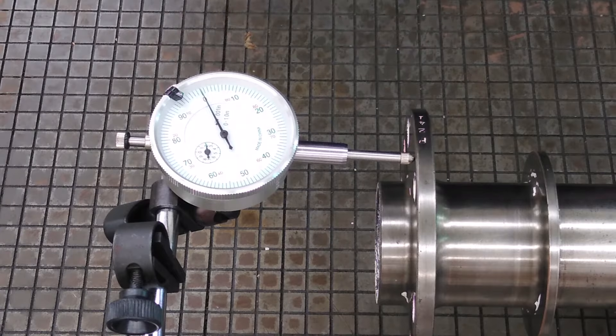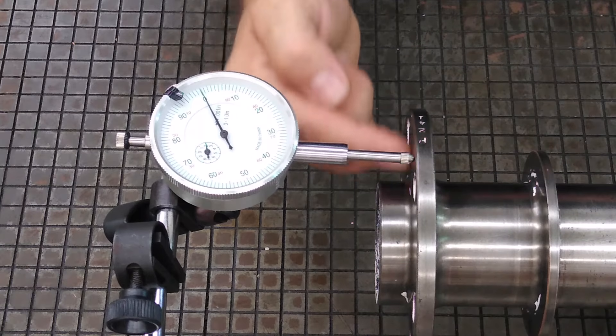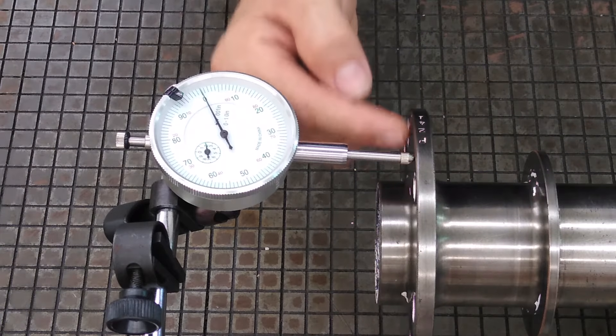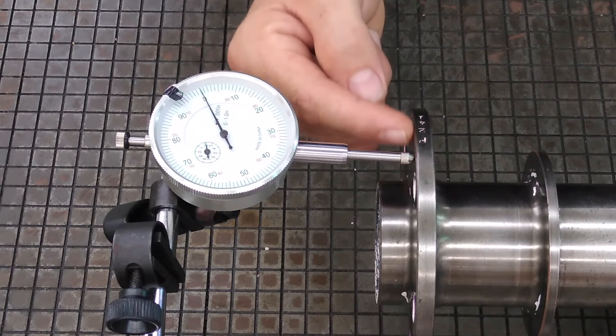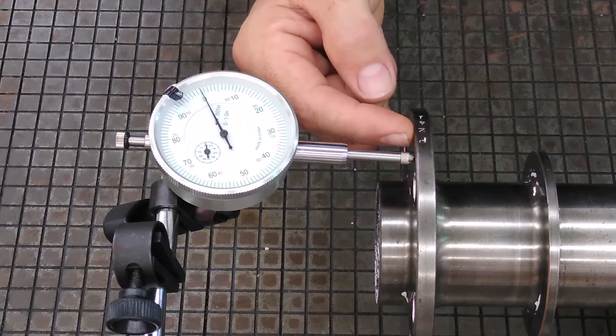Now you want to measure that as far out. The overhaul manual will give you specifics of where on this face of the flange to take your readings from. In this particular case, it is taken as far out in the diameter of this flange as possible.